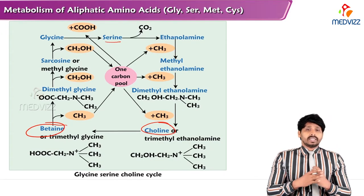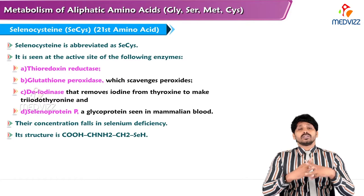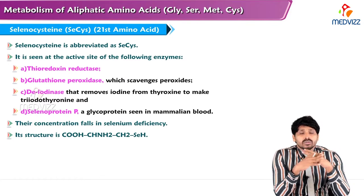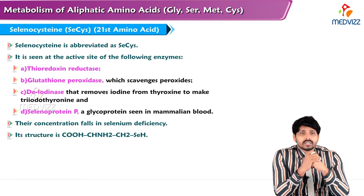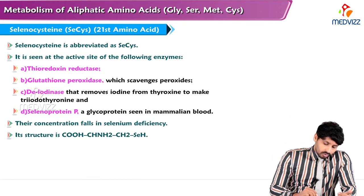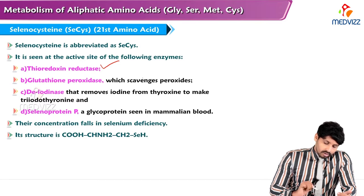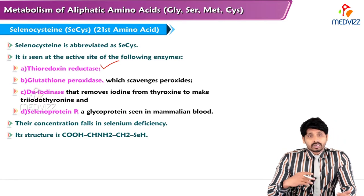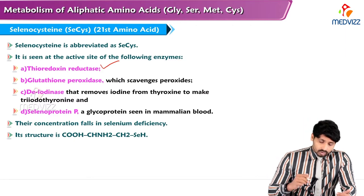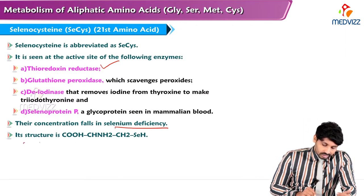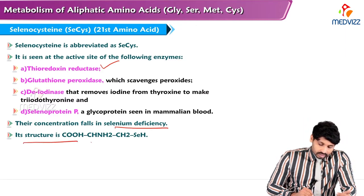Also contributing to this cycle is selenocysteine — the 21st amino acid, abbreviated as SeCys. Selenocysteine is found in thioredoxin reductase, glutathione peroxidase, deiodinase, and selenoprotein (a glycoprotein seen in animals), and its concentration falls in selenium deficiency. Its structure is: COOH–CH(NH₂)–CH₂–SeH.